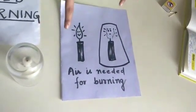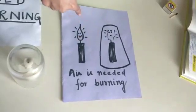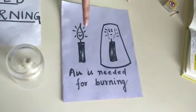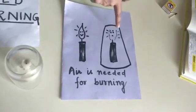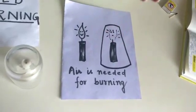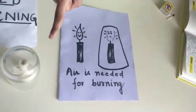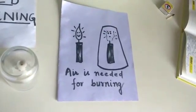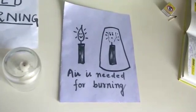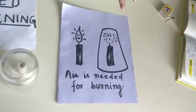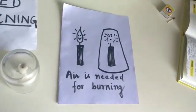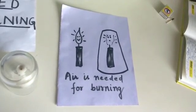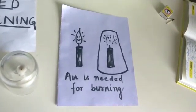Until the time the air was around the candle, it continued to burn. But as it was covered with the glass, the air was blocked completely. The limited oxygen inside the glass made the candle burn, but as soon as the oxygen was finished, the flame extinguished. So, we see how important oxygen is for burning. Thank you.